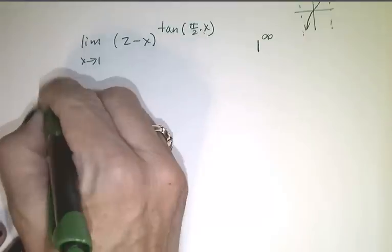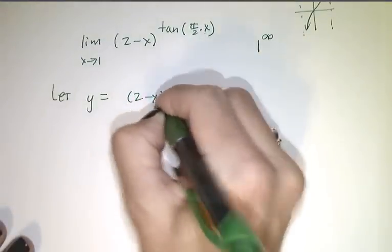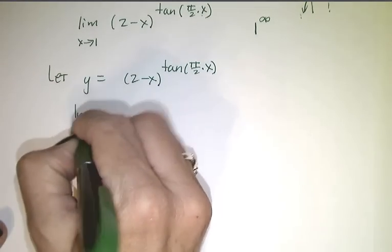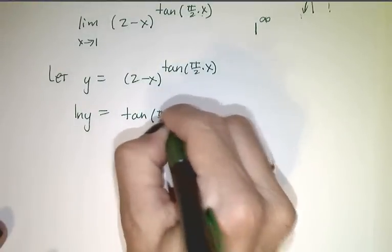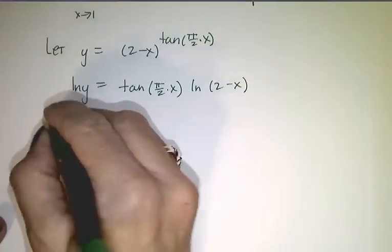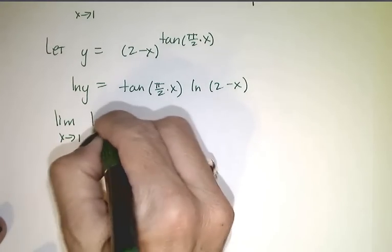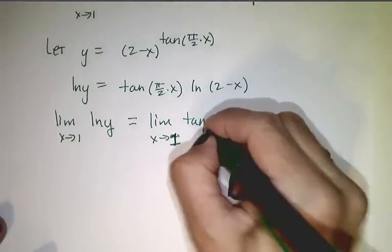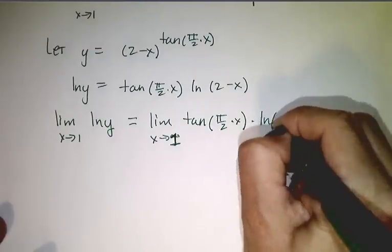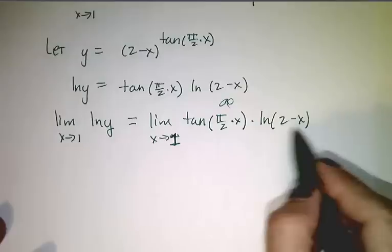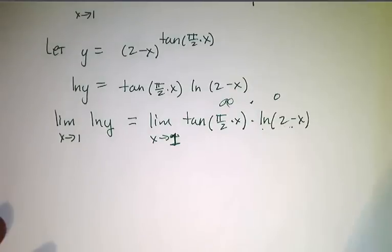We're going to proceed as before. Let y equal (2 minus x) to the tangent of pi over 2 times x. We take the natural log of both sides, which brings the power down: ln(y) equals the tangent of pi over 2 times x, times ln(2 minus x). Be very careful and diligent about your parentheses. The limit as x goes to 1 of ln(y) gives us tangent going to infinity, and ln(2 minus x) going to ln(1) which is 0. So this is an infinity times 0 indeterminate product.